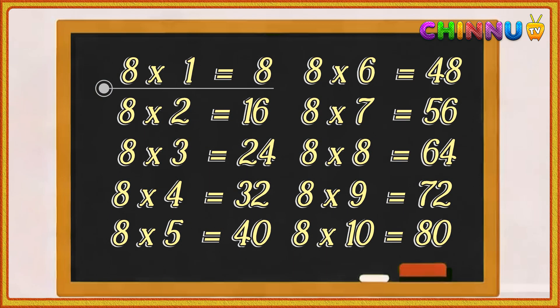Eight ones are eight. Eight twos are sixteen. Eight threes are twenty-four. Eight fours are thirty-six. Eight fives are forty-eight. Eight sevens are fifty-six. Eight eights are sixty...